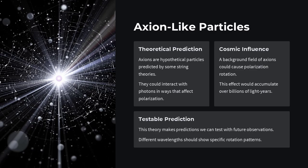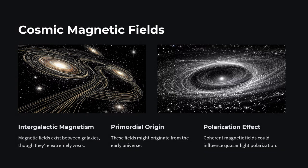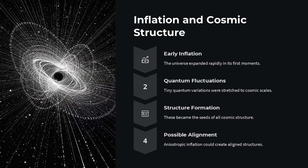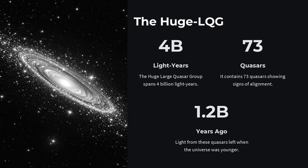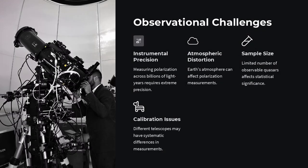Or maybe exotic particles, axion-like fields, interact with photons over intergalactic distances, subtly rotating their polarization in sync. Could ripples in spacetime itself create such an effect? The jury is still out, but each hypothesis challenges our understanding of cosmic order.